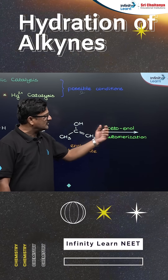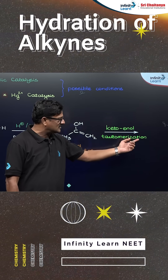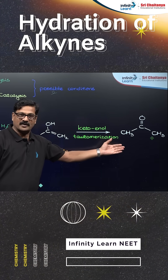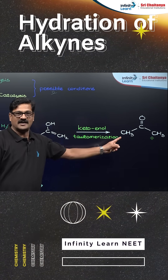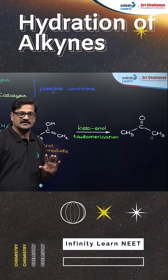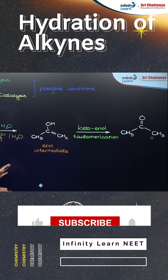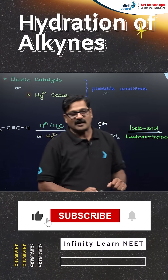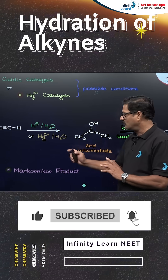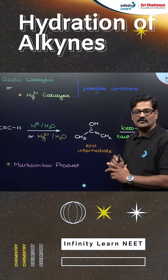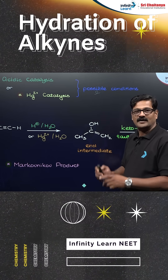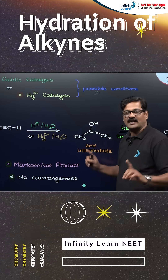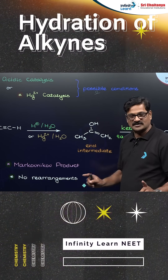Through keto-enol tautomerization, you are going to get acetone (propanone) as the end product. The noteworthy points in the hydration of an alkyne are: it should follow Markovnikov's rule, and no rearrangement is possible.